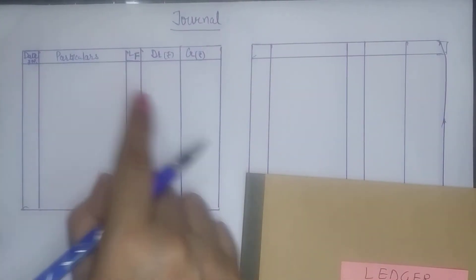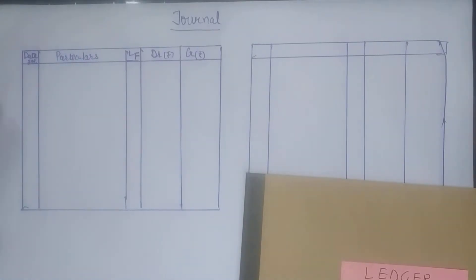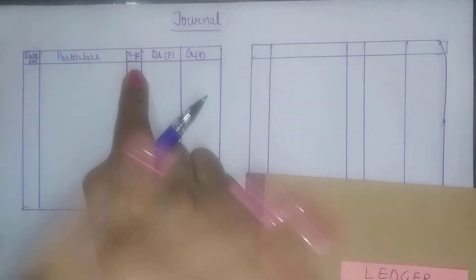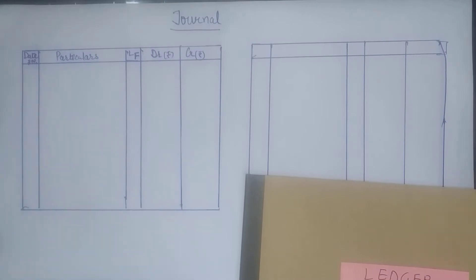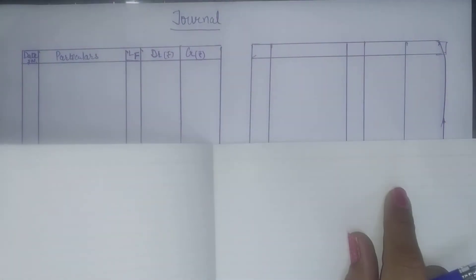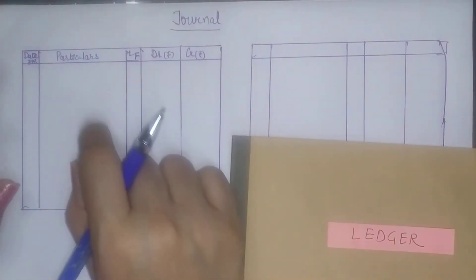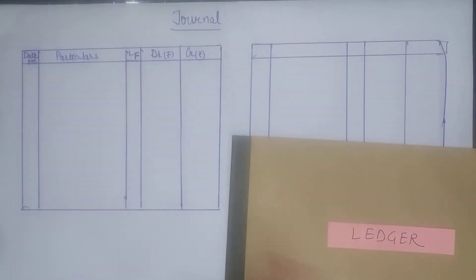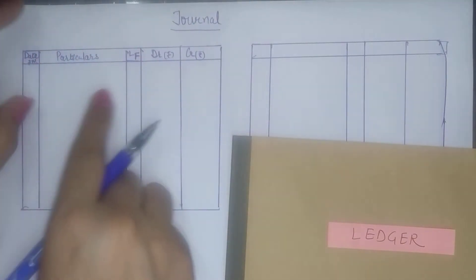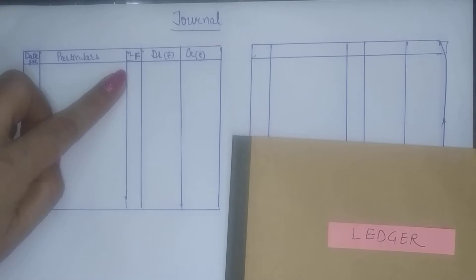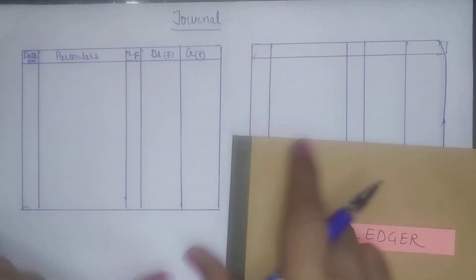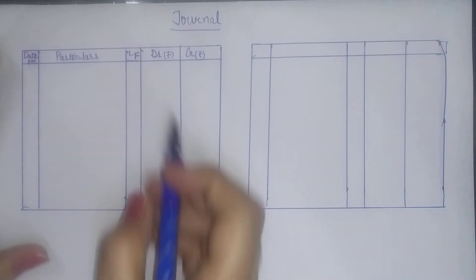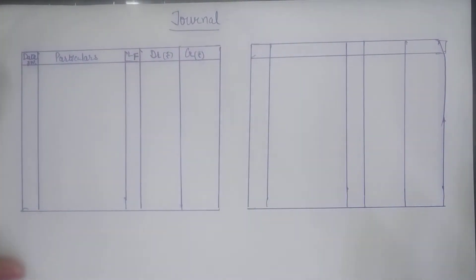In the ledger book, on each page an account is maintained — maybe cash account on page 1, bank account on page 2, customer account on page 3. So when a journal entry is posted to the ledger book, suppose I have written cash account to RAM account — cash account is on page 1 of my ledger book, so ledger folio number 1 is written there. RAM account is on page 10, so ledger folio 10 is written. This is the link between journal and ledger.